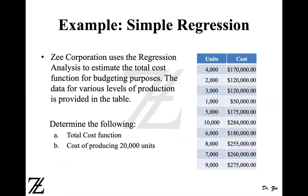The example says Z-Corporation uses regression analysis to estimate the total cost function for budgeting purposes. The data for various levels of production is provided in the table. Data is provided at numerous activity levels — 4,000, 2,000, 3,000, 1,000 — randomly organized, with the corresponding cost at each activity level. At 4,000 units you have $170,000 total cost. Part A asks you to estimate the total cost equation, and Part B asks you to find the cost of producing 20,000 units.